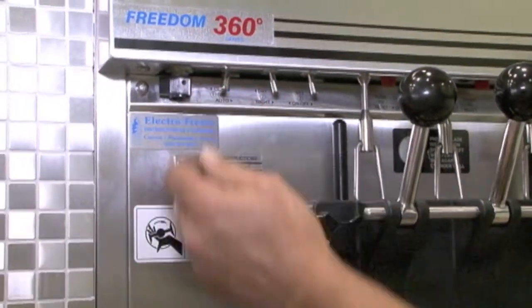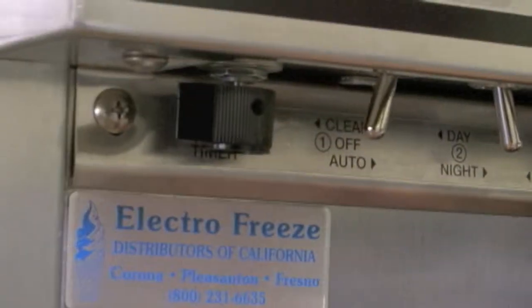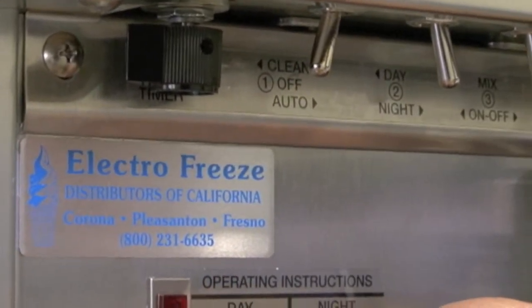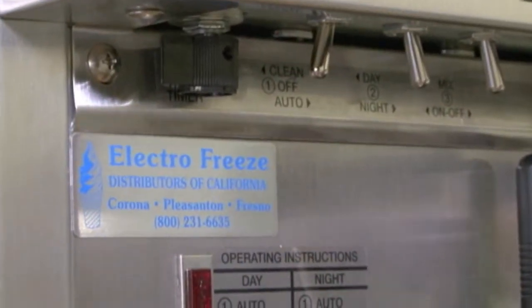Clean just turns the beater shaft inside. That's all cleaning does. It doesn't clean the machine for you. You're going to clean the machine, but it just turns that beater shaft while you're running water through it.